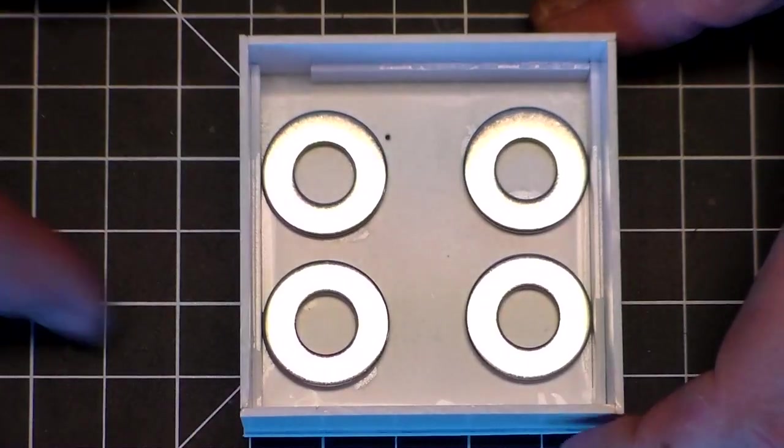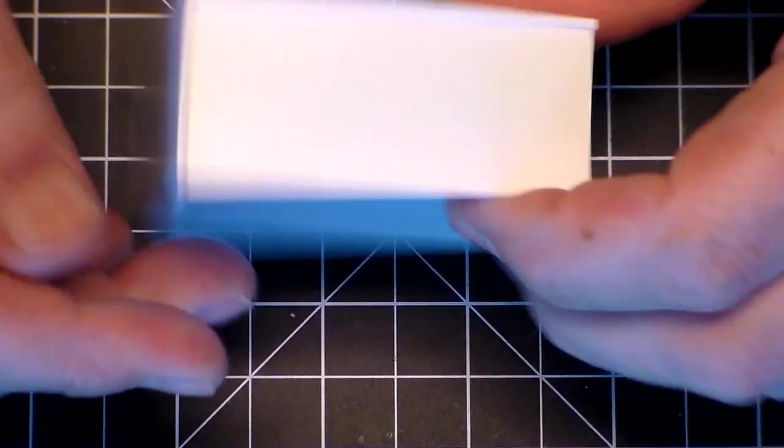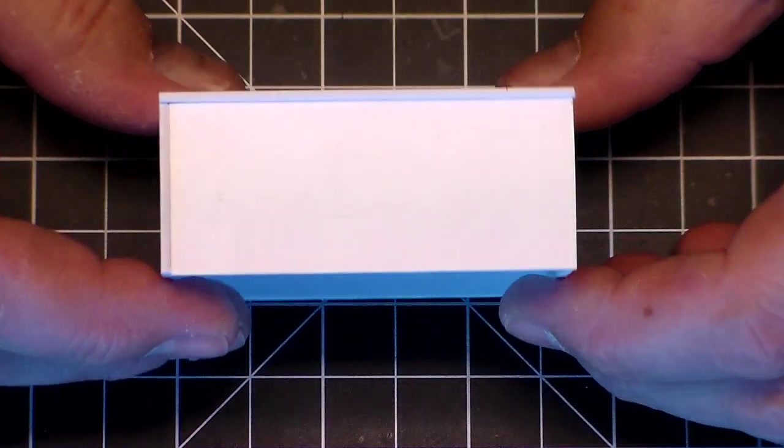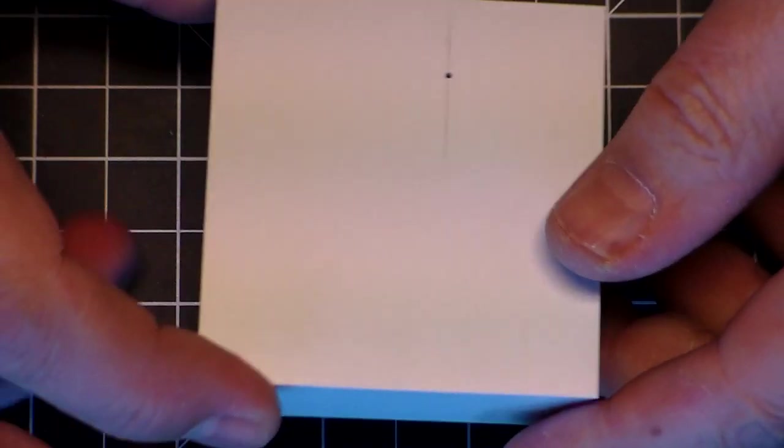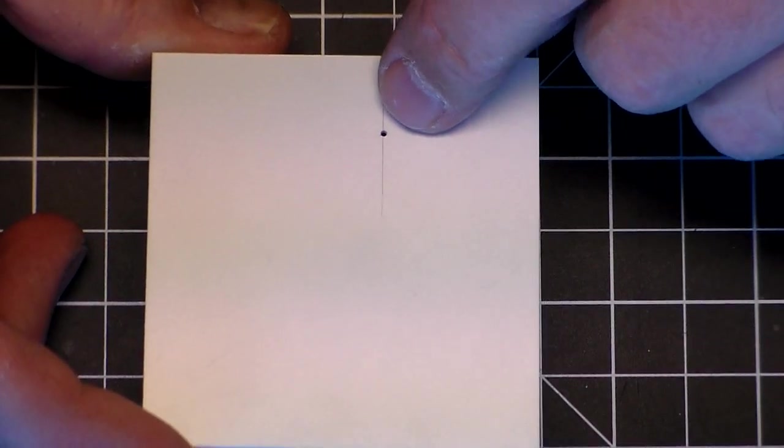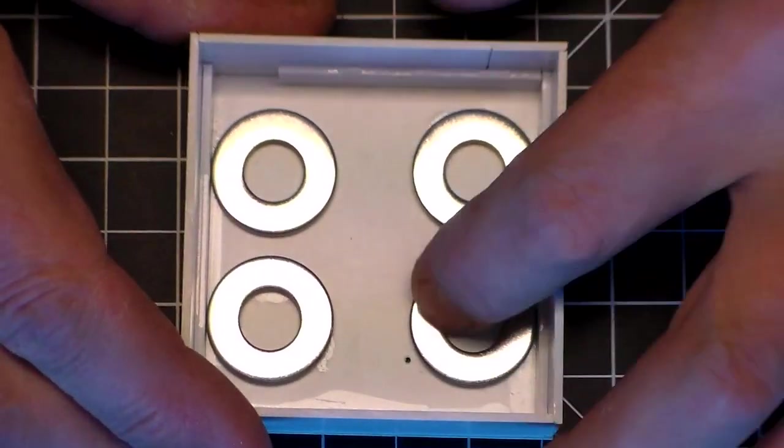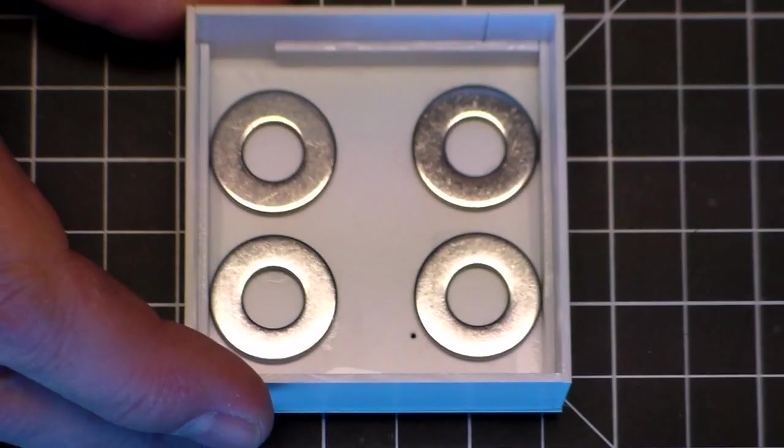So now that that is ready to go what I've also done is I made a box out of some styrene, I believe it's .60 styrene and I measured a hole for my wires to go through under his foot, so a foot here and a foot here.